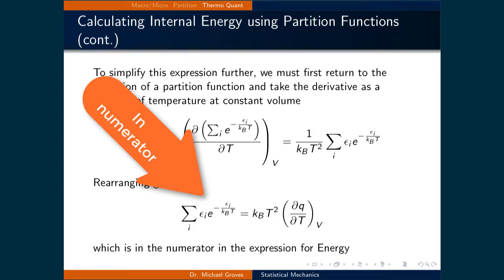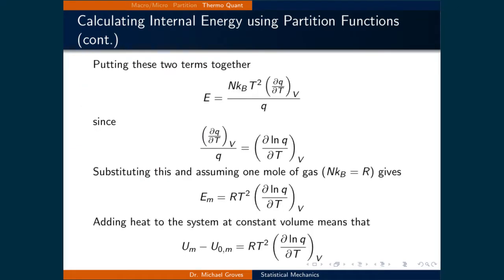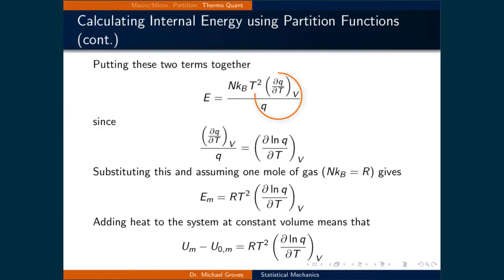The left-hand side of this equation is in the numerator of our current expression. Putting this result in gives E equal to N times k_B times T squared times the partial derivative of Q with respect to T at constant volume, divided by the partition function Q. The partial derivative of Q with respect to T divided by Q can be expressed as the partial derivative of the natural logarithm of Q with respect to T at constant volume.